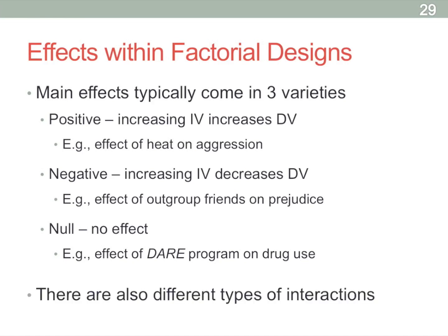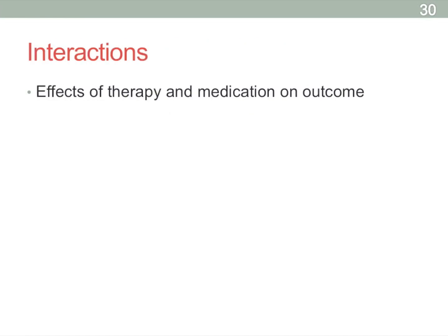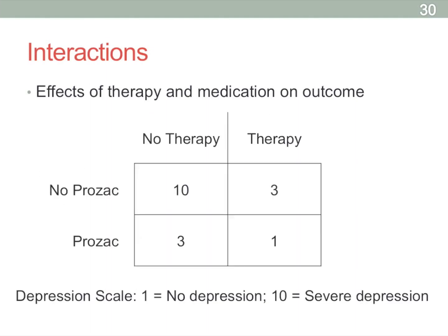Just like there are three main types of main effects, there are also three main types of interactions we're going to talk about. Before we get to them, let's outline a simple study we can look at with interactions. We're talking about the treatment of people with depression — treated with therapy, medication, or both. Depression is measured on a scale of one to ten, with ten being very severe.